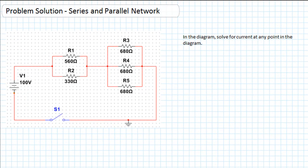The problem we've been given to solve is to look at the circuit we have here and solve for current at any point in the diagram. Because it's a complex network we have to start somewhere and break it down, so what we're going to begin with is determining the total resistance of the R1/R2 network.